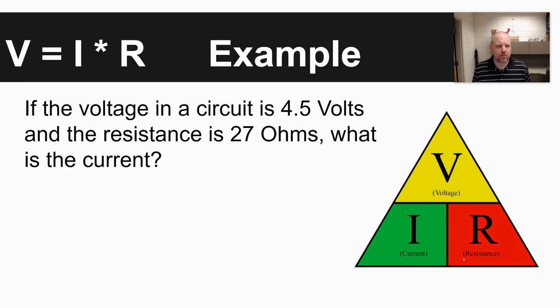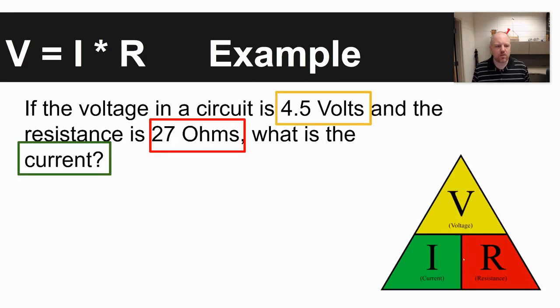Just some examples to go through for problems. It says if the voltage of the circuit is 4.5 volts and the resistance is 27 ohms, what is the current? The first thing you want to do is determine what you're given in the problem. We are given 4.5 volts, 27 ohms, and we're asked to solve for current.